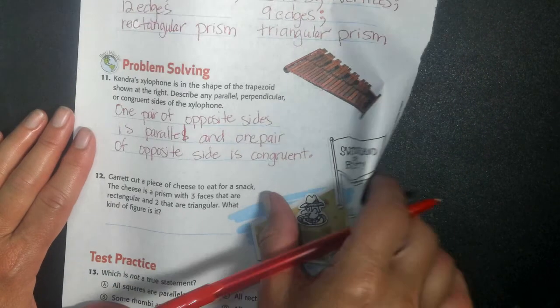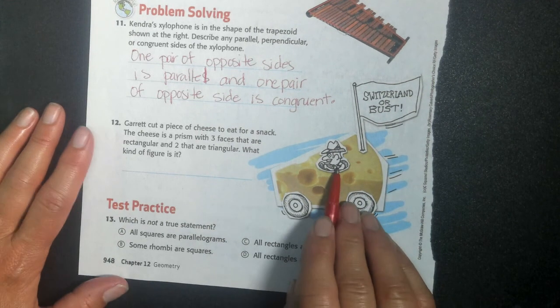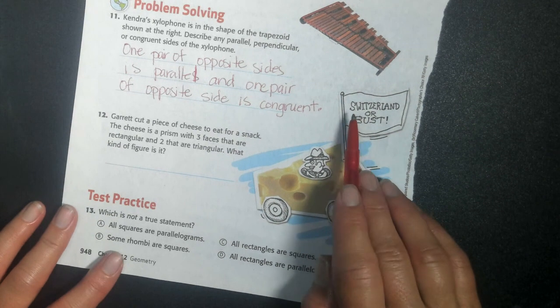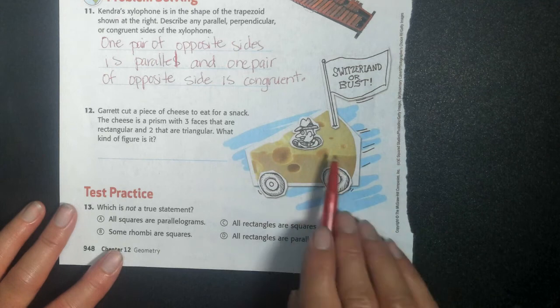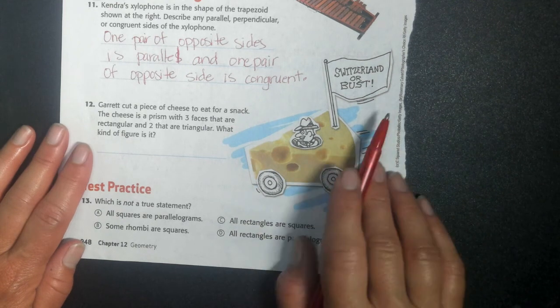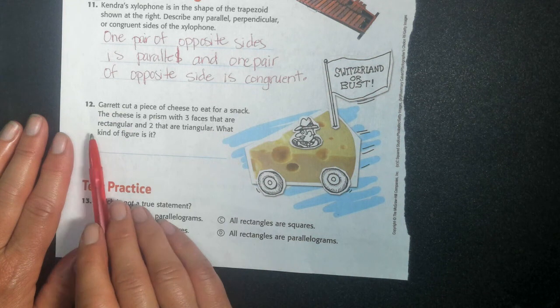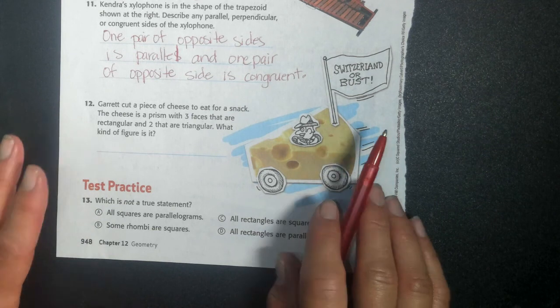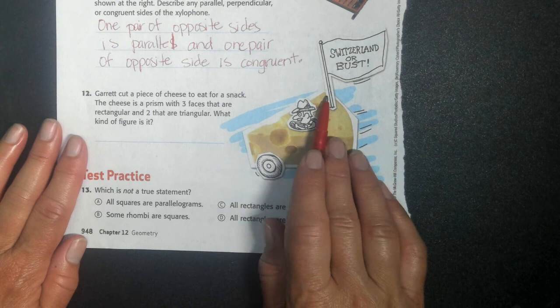Next one. Two more problems and we're done. Here's Garrett. Garrett cut a piece of cheese. You can see his cheese. Someone turned it into a car. He is driving it. He put wheels on it. He put on a little saying here. Switzerland or bust. We like to write these signs if we're traveling somewhere. If you were traveling from Mexico to California, you would write a sign that said California or bust while you were driving. If you bust, you just give up. If you're either going to make it to, he's either going to make it to Switzerland or he's giving up. He busts. To bust is to give up. So Garrett cut a piece of cheese to eat for a snack. The cheese is a prism with three faces that are rectangular and two that are triangular. What kind of figure is it? It's not really. Remember when we did the pie? One thing about that piece of pie. It had a curved edge. So this one does two. So it's not superly a prism. But hopefully you can see it's not a rectangle. It's a triangular prism.